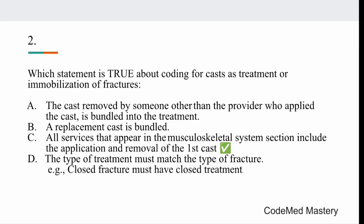Option A is wrong because removal of a cast is not bundled into fracture care when the cast was applied by another provider. Option B is wrong because replacement casts or splints are not bundled. Option D is wrong because a closed fracture does not require closed treatment. A closed fracture treated with open reduction internal fixation is billed as open treatment; if treated with percutaneous pinning, we bill percutaneous treatment. Treatment determines the CPT code, not the fracture type.